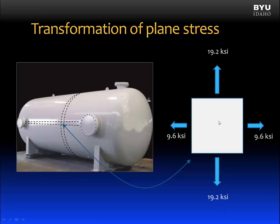A stress element can be used to show the stresses occurring in the tank wall. Instead of drawing a volume element or cube to represent the material, I have shown a simple square, because our stresses are plane stresses — they occur in the plane of the tank wall. The edges of the element are aligned in the directions of the longitudinal and circumferential stresses. Notice the element is in static equilibrium, and no shear stress appears on this element. But that does not mean there is no shear stress in the tank wall — there is shear stress there.